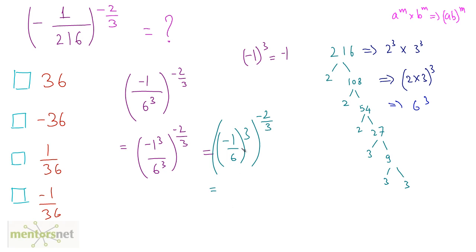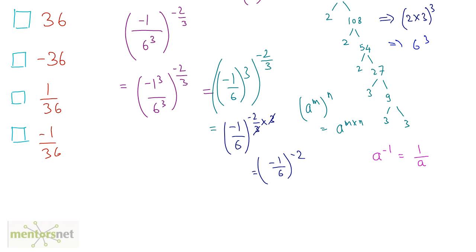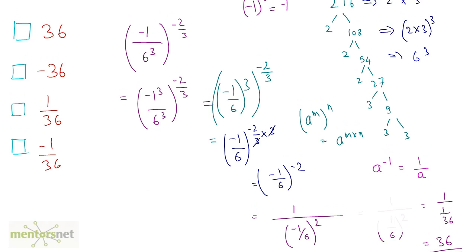Using the law a raised to m raised to n equals a raised to m times n, this becomes minus 1 by 6 raised to minus 2 by 3 times 3. The 3s cancel, leaving minus 1 by 6 raised to minus 2. Since a raised to minus 1 equals 1 by a, we write this as 1 upon minus 1 by 6 raised to 2, which equals 1 upon 1 by 36, giving us 36. The correct answer is option A: 36.